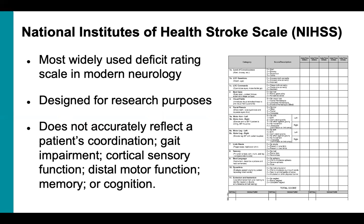The NIH stroke scale in current use has evolved from an earlier version that is no longer used, but the scale still does not accurately reflect a patient's coordination, gait impairment, cortical sensory function, distal motor function, memory, or cognition. Don't get me wrong — it has its benefits. But it's important to appreciate that it also has limitations, and it should be used with caution and not as a substitute for a comprehensive neurological examination.